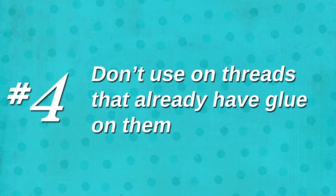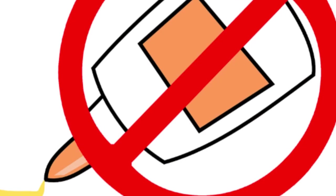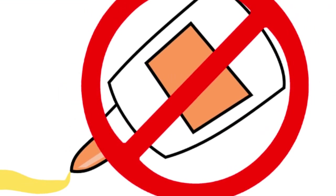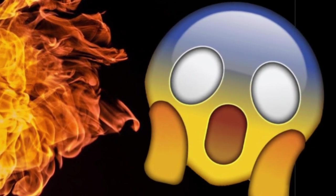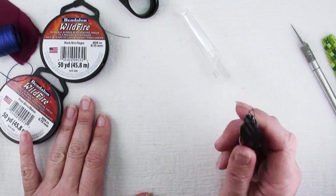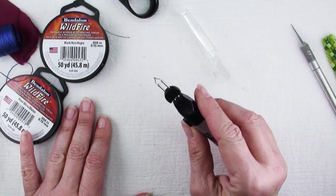Number four, real short and sweet here: do not use a thread burner in conjunction with glue. Lots of glues are flammable and no, just don't. If you must use glue in your project, use it after you've done all of your thread burning.